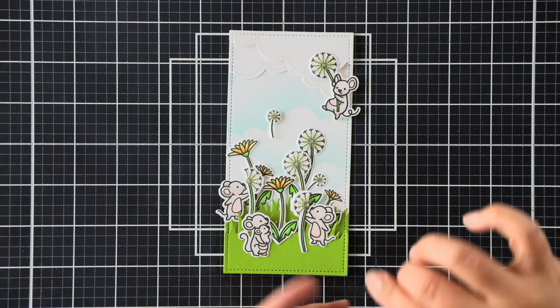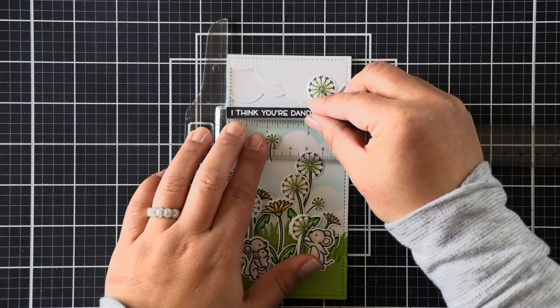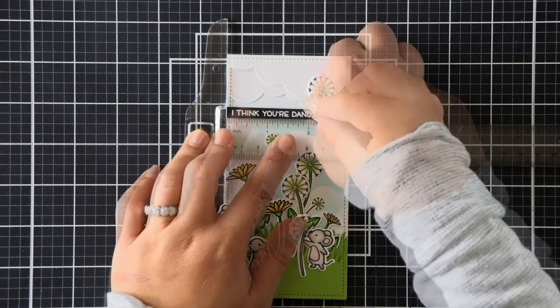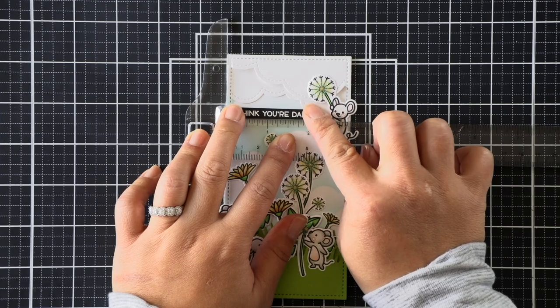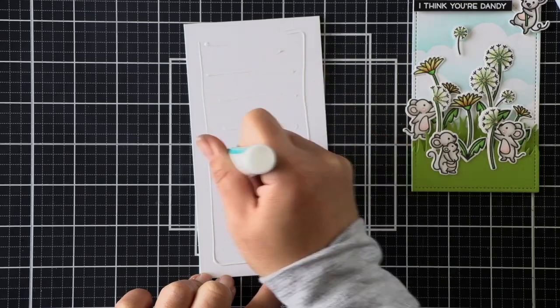I've added some black foam adhesive to the back of my sentiment strip, and I'm using my T ruler to help me line up that sentiment strip to make sure that it lines up perfectly. Last but not least, I created a card base that is a quarter inch bigger than my panel. That way it has an eighth inch mat all the way around.